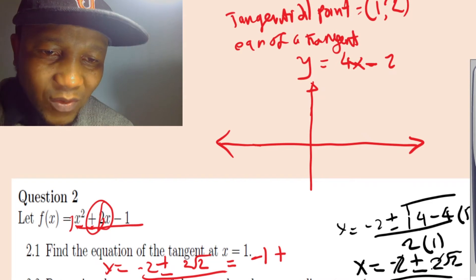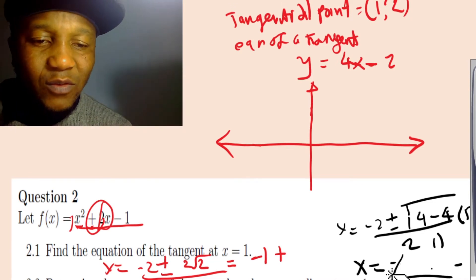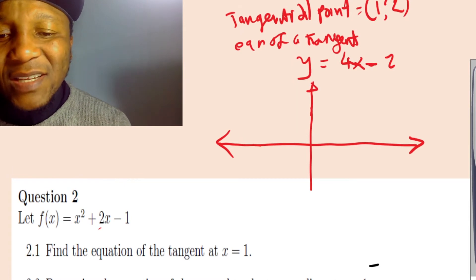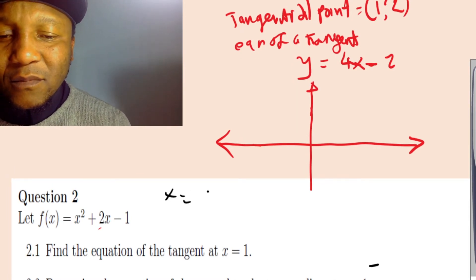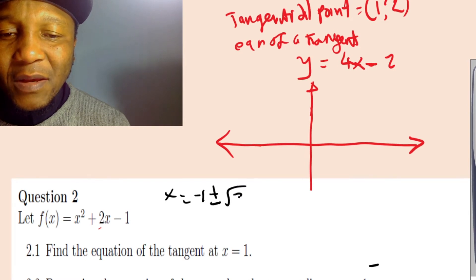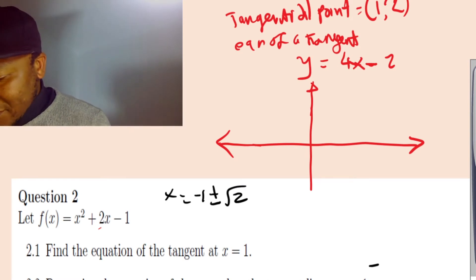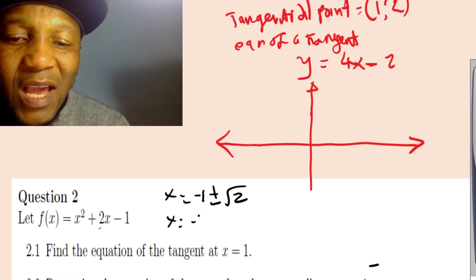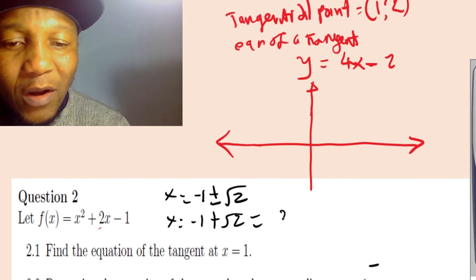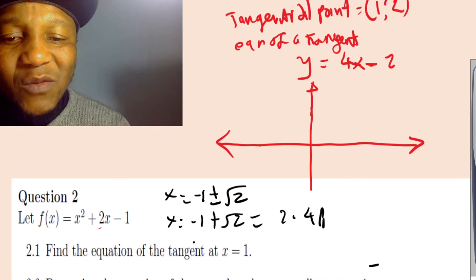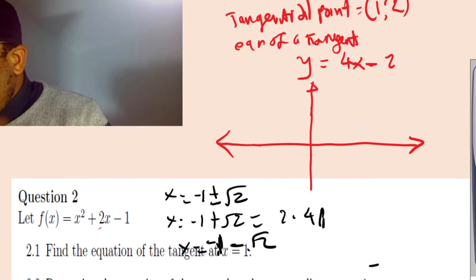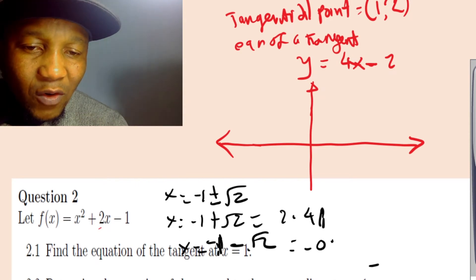So x = -1 ± √2. Plugging into the calculator: x = -1 + √2 ≈ 0.41, and x = -1 - √2 ≈ -2.41. So the x-intercepts of the original curve are approximately 0.41 and -2.41.